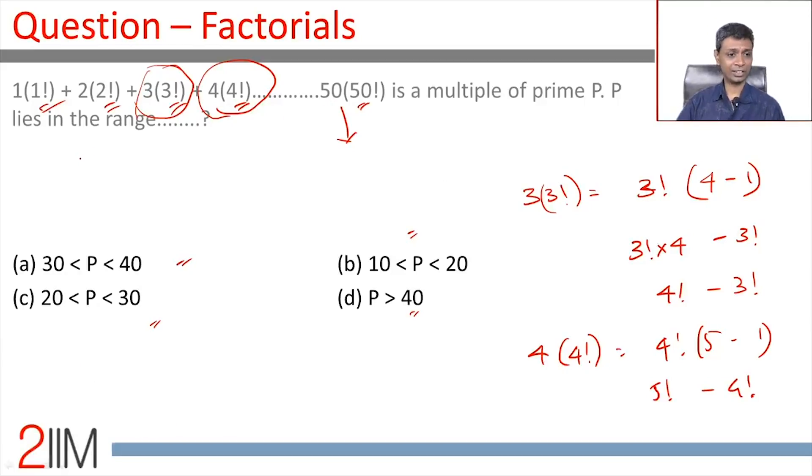This term is 2 factorial minus 1 factorial. Second term is 3 factorial minus 2 factorial. Third term is 4 factorial minus 3 factorial. All the way till 51 factorial minus 50 factorial.